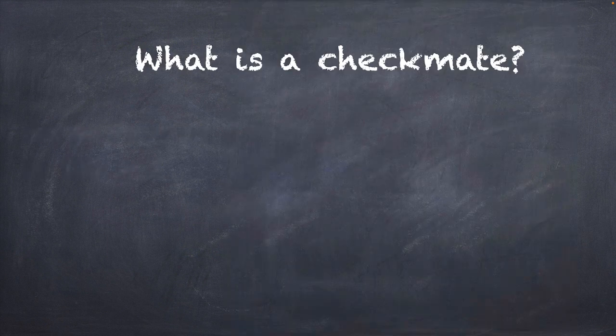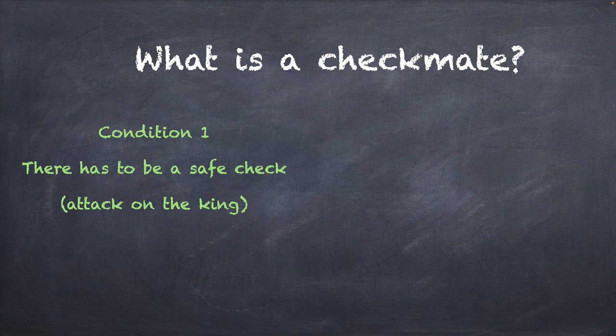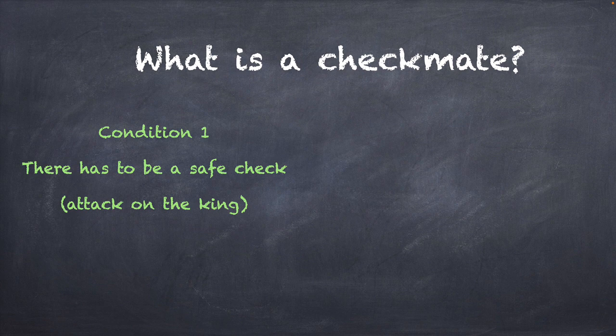Let's get to the very brass tacks of it. What is a checkmate? Checkmate is basically the fulfillment of two conditions. The first condition is there has to be a safe check — an attack on the king is called a check. If there is no attack on the king, it could be a stalemate or something else, but definitely not a checkmate.